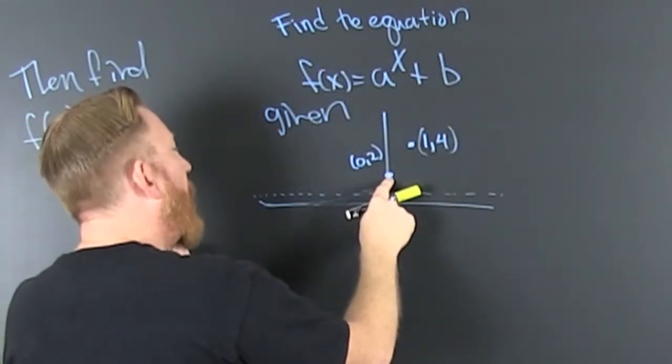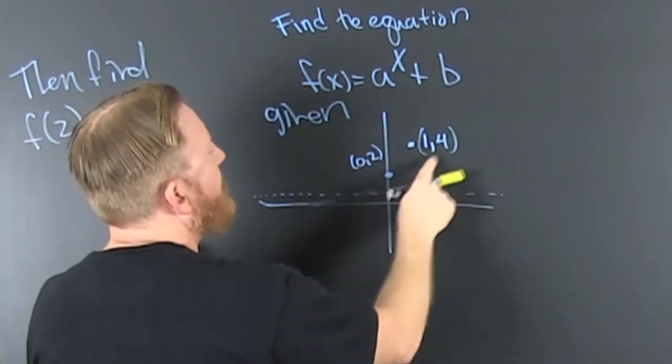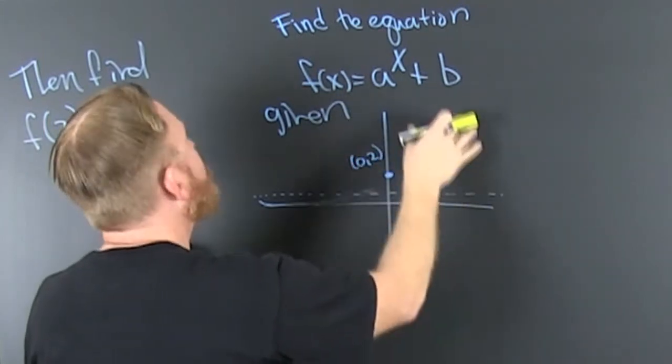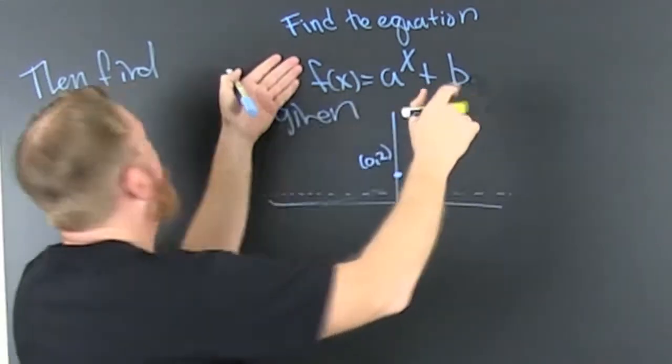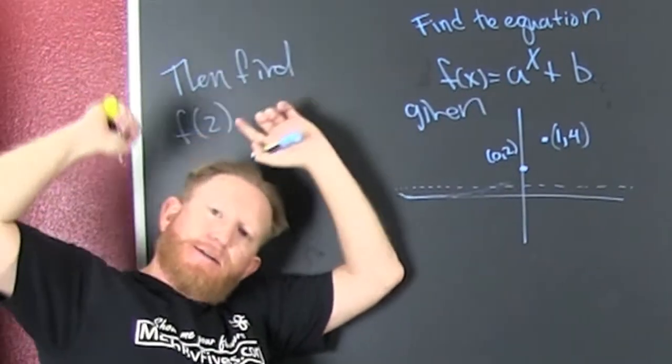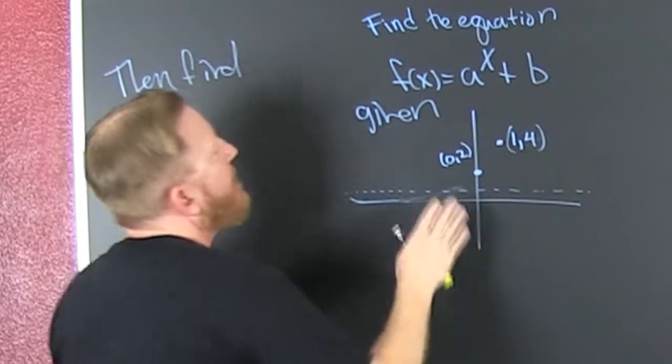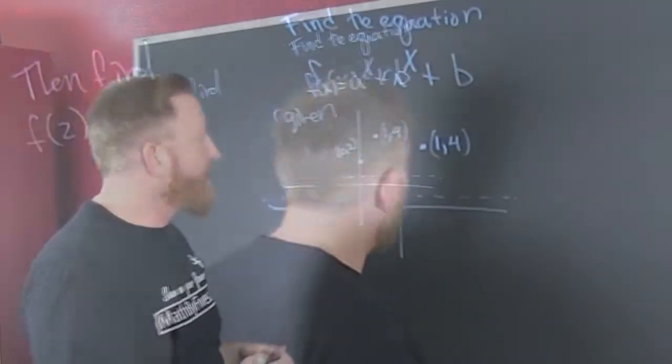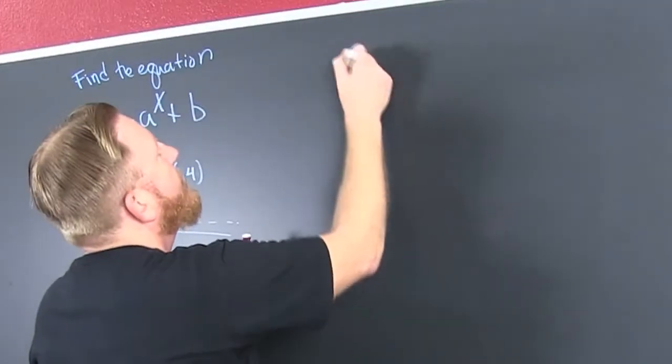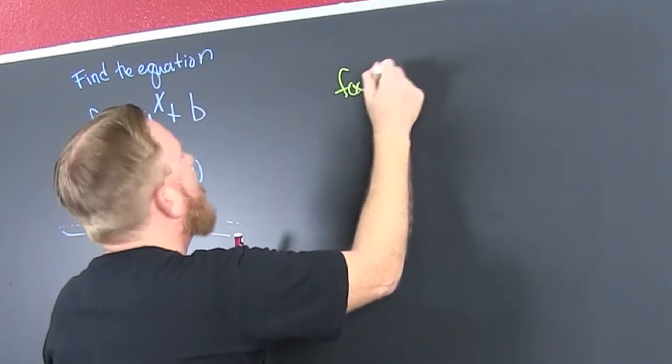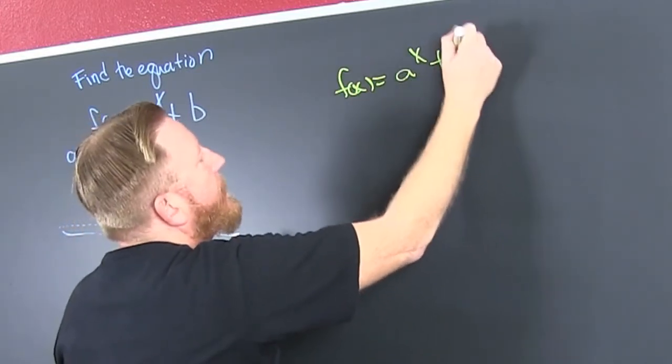It has a y-intercept of 0, 2, and some other point, 1, 4, and they tell us that it's this form. And after we find that, they're looking for what f of 2 is, but we need to find that form first. So we have our f of x. That's a^x plus b.